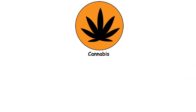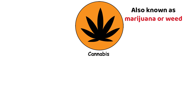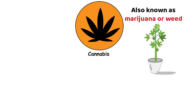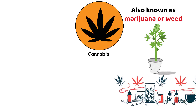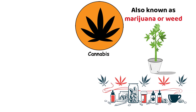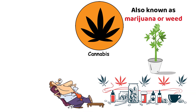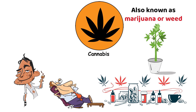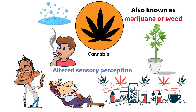Cannabis, also known as marijuana or weed, is a psychoactive plant containing THC and other cannabinoids. It can produce relaxation, euphoria, and altered sensory perception when smoked, vaporized, or ingested.